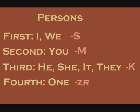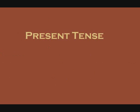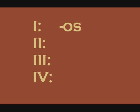ZR is pronounced ZER. Now, before this person part comes the tense part. The most basic tense you can use is the present tense, which is denoted by an O. So a first person present tense ending would be OS. Likewise, second person present would be OM, third person present would be OK, and fourth person present would be OZER.